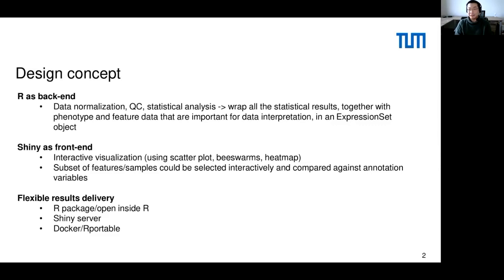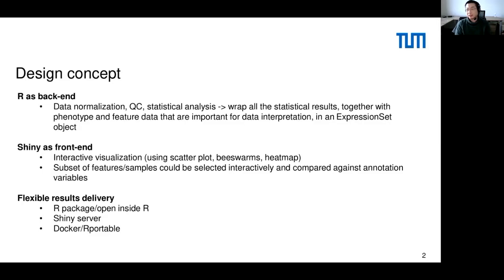Another visualization in the Shiny front-end is the beeswarm, which is similar to a box plot — you can visualize a quantitative variable against a categorical variable. We prefer beeswarms because every single point can be seen in the plot and selected. There's also a widely used heatmap where you can zoom in, zoom out, and select an area. When a feature is selected, we may do, for example, enrichment analysis. When samples are selected, we can do, for example, Kaplan-Meier curves stratified by selected or unselected, or some independence test using Fisher's exact test or chi-square test.